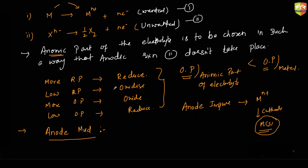We have discussed all four steps involved in the extraction of various metals. Now we will look at how metals like silver, copper, and iron are extracted using different processes. But before that, I want to discuss the Ellingham diagram.